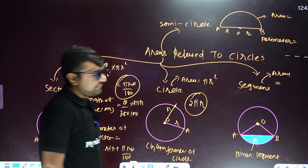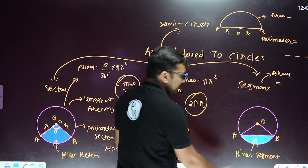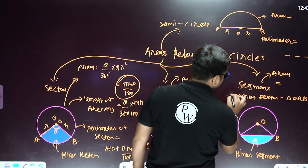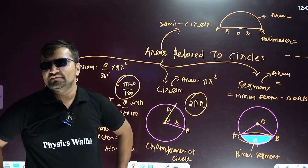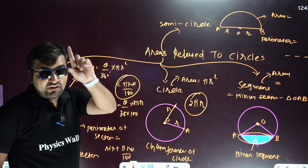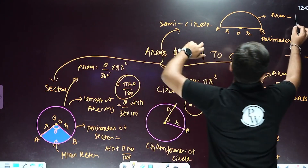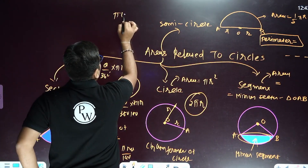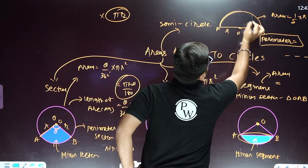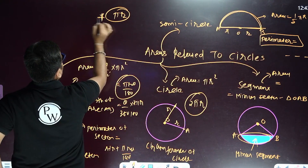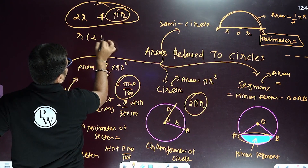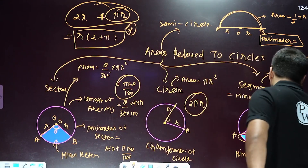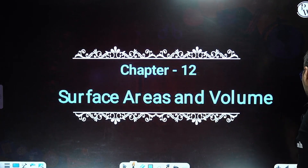For the minor segment, you find it by: minor sector area minus triangle OAB area — that gives you the blue region of the minor segment. Now, a very important thing about the semicircle: the area of a semicircle is just half of the circle, but the perimeter is not just pi r — it is pi r plus 2r. Take r as common, so the perimeter of the semicircle is r times (2 plus pi). Remember this formula carefully.